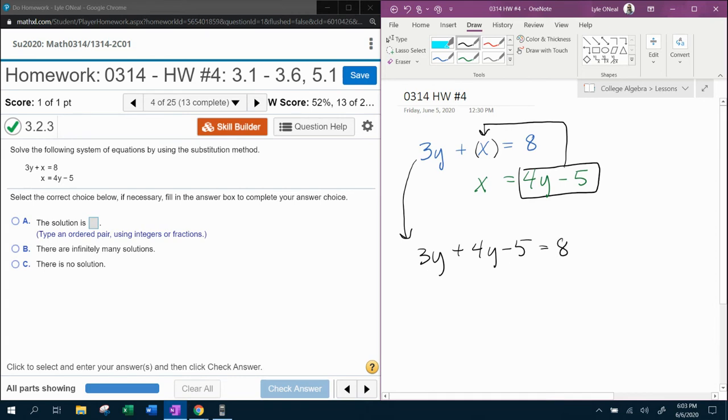And then I can solve for y. So doing a little CLT, a little combined like terms, we're going to get 7y. And divide both sides by 7, and we're going to get what y is equal to.